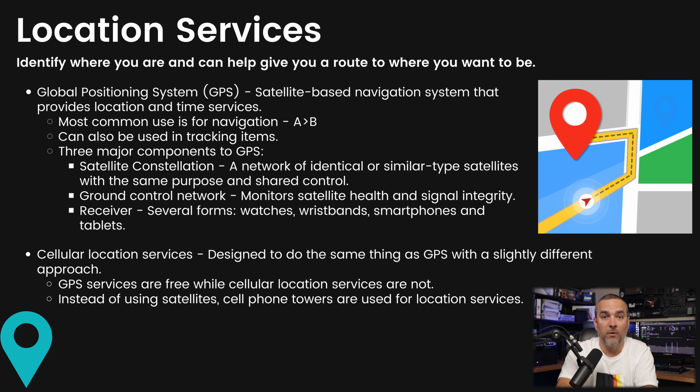There are three major components to GPS. First, satellite constellation — a network of similar satellites with the same purpose and shared control. Second, ground control network, which monitors satellite health and signal integrity. Third, the receiver, which comes in several forms including watches, wristbands, smartphones, and tablets.